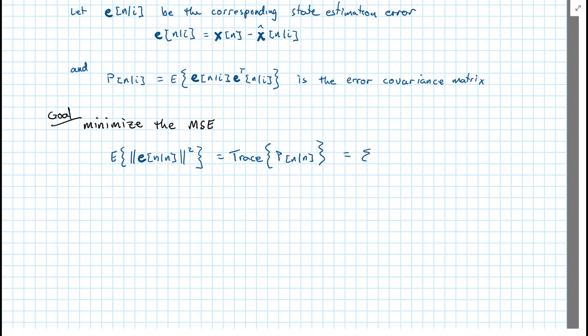And that's simply equal to sum from k equals 0 to, if we have a pth order, p minus 1, of e_k, that's the kth element of our vector e, squared like that.